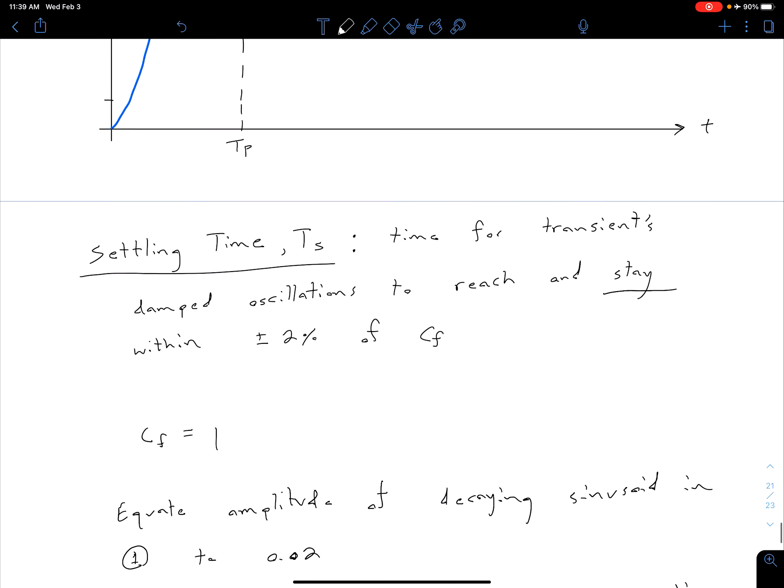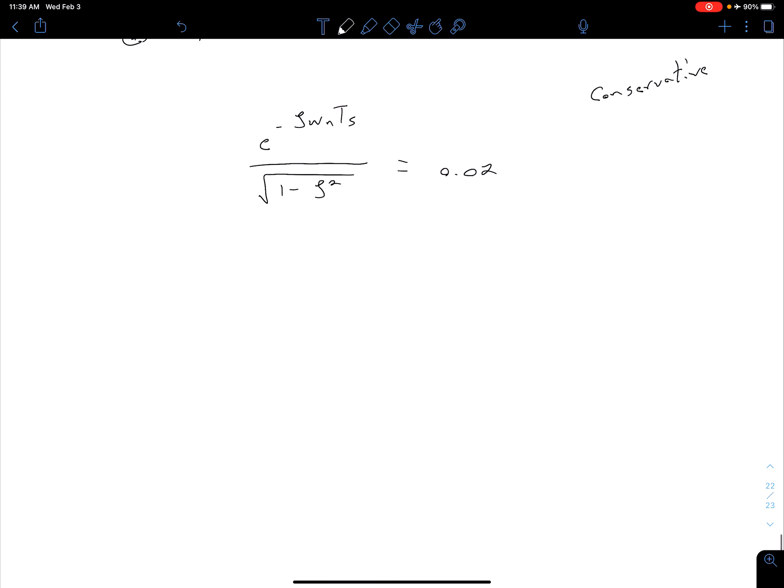If we solve this for our T S, we get an expression T S equal to, in our numerator, we have negative log of 0.02, square root of 1 minus zeta squared, and in the denominator, we have zeta times omega n. So we can use this equation and be more precise if we need to, but most of the time we can use an approximation that's going to be a little simpler.